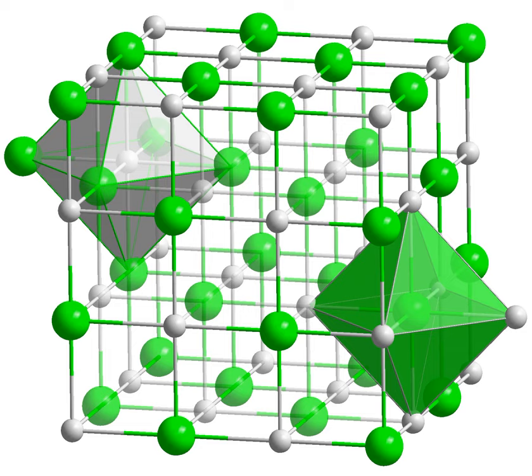Co2+ plus 2OH- gives cobalt(II) hydroxide, then cobalt(II) hydroxide gives CoO plus H2O.